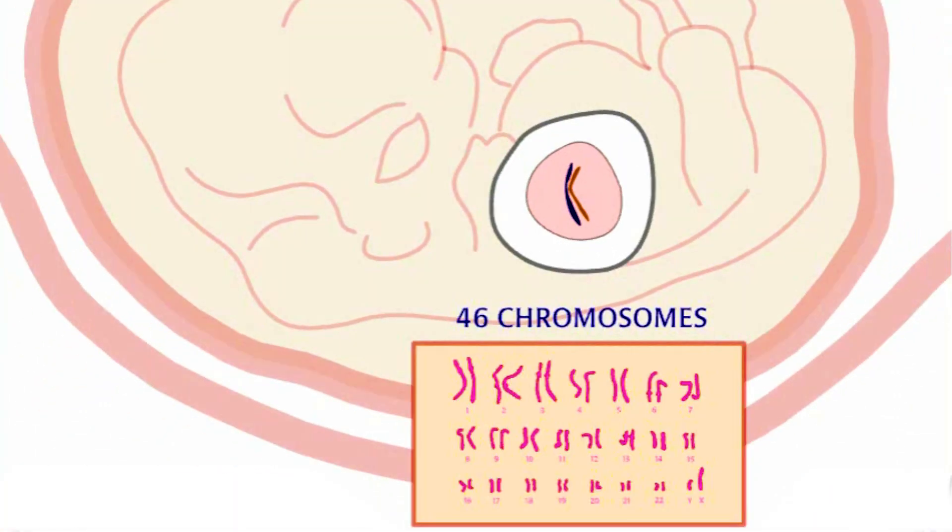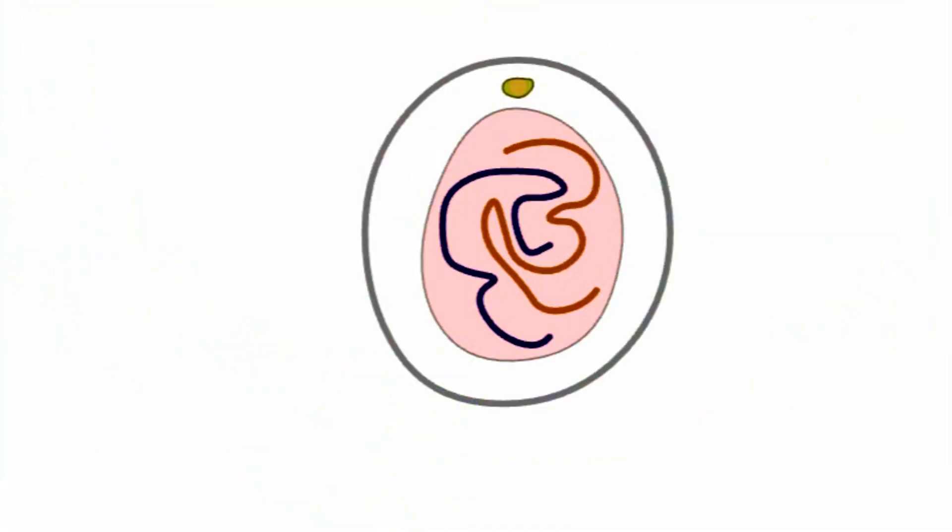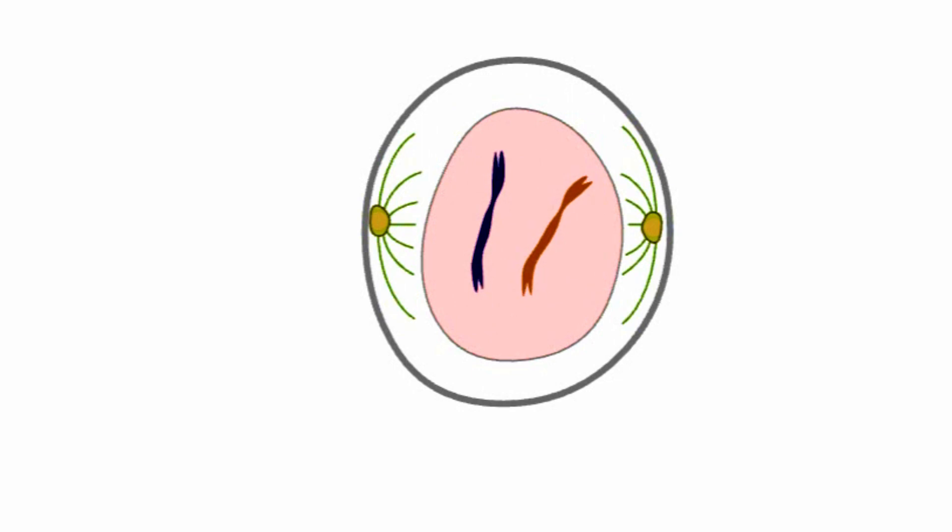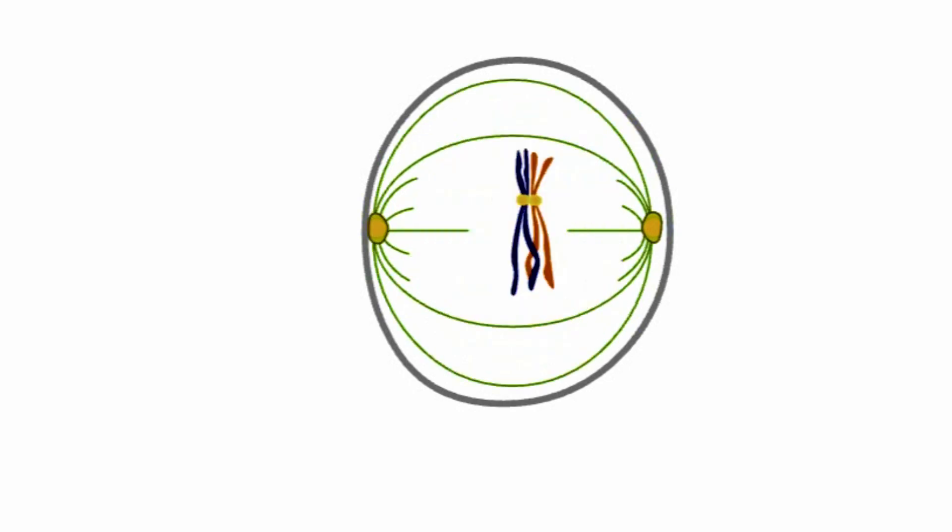When fertilization occurs, the resulting embryo will have a total of 46 chromosomes, 23 pairs. But things can go wrong. During meiosis, the initial stages of meiosis may run smoothly. However, sometimes in later stages...